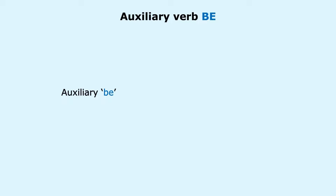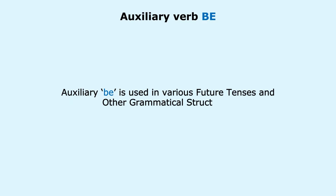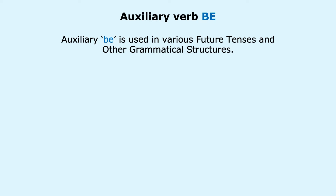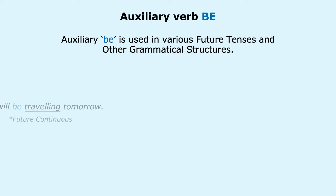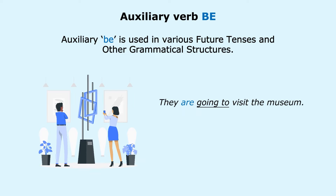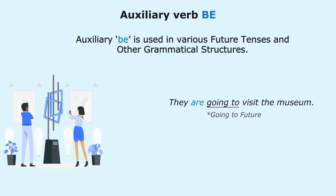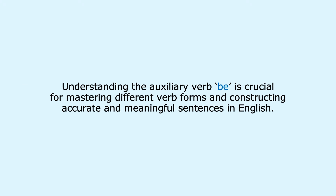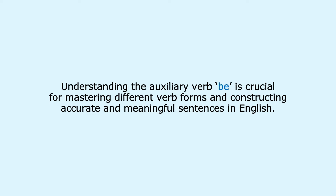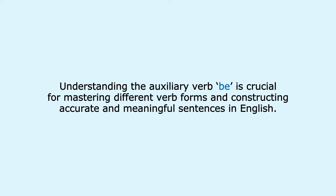Auxiliary Be is also used in various future tenses and other grammatical structures. For example: 'She will be travelling tomorrow' (future continuous); 'They are going to visit the museum' (going to future). Understanding the auxiliary verb Be is crucial for mastering different verb forms and constructing accurate and meaningful sentences in English.